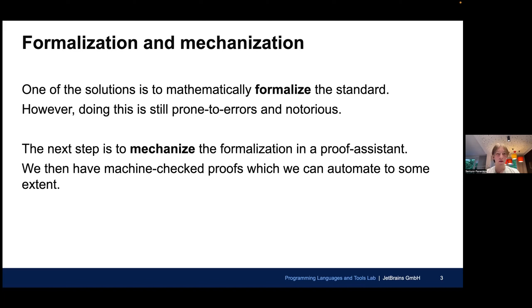The next step, the next option is to mechanize the formalization in some kind of proof assistant. For example, in Coq proof assistant, which we used in this project and which is basically a programming language that allows for defining and reasoning about programs. Its main advantage is that you have machine-checked proofs, those proofs are automatically checked, and if they are incorrect, the system signals you about that. And you can apply automation to those proofs to get rid of notorious parts and lighten the burden of researchers.